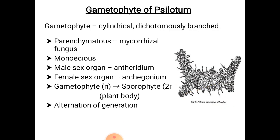Now let us know about the gametophyte of Psilotum. The gametophyte is also called prothallus. The mature gametophyte or prothallus of Psilotum is haploid. It is a cylindrical, dichotomously branched structure. It may be colorless or brownish in color, and measures about 0.5 to 2 mm in size. Many rhizoids arise from the prothallus. It consists of an epidermis which encloses parenchyma cells associated with mycorrhizal fungus.